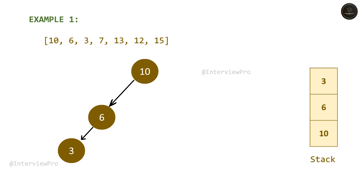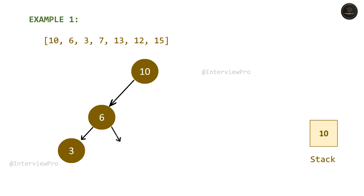Now we have 7. In order to insert 7, we have to go back from 3 to 6. Whenever we go back from 3 to 6, let's remove it from the stack. We are going from 3 to 6, so remove 3 from the stack. To insert 7, we also have to go back to the root, so we don't need 6 on the stack either. We remove 6 from the stack and insert 7 into the tree, then push it onto the stack. Now our stack has 7 and 10.